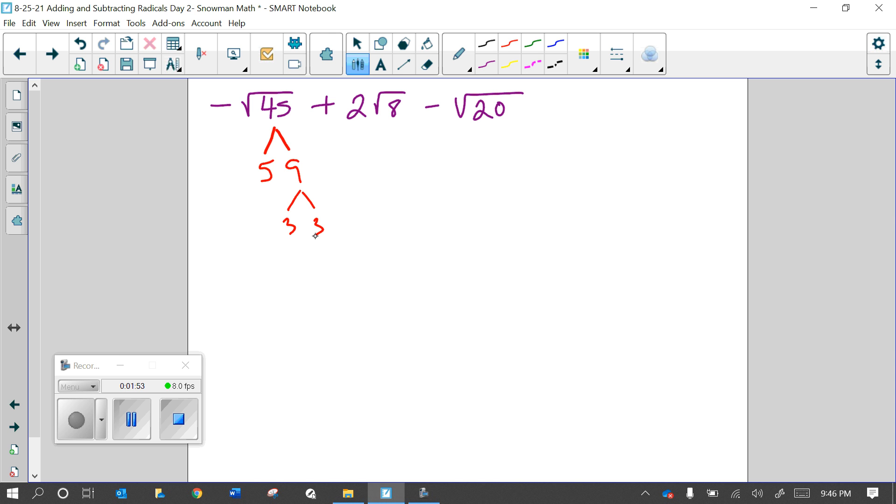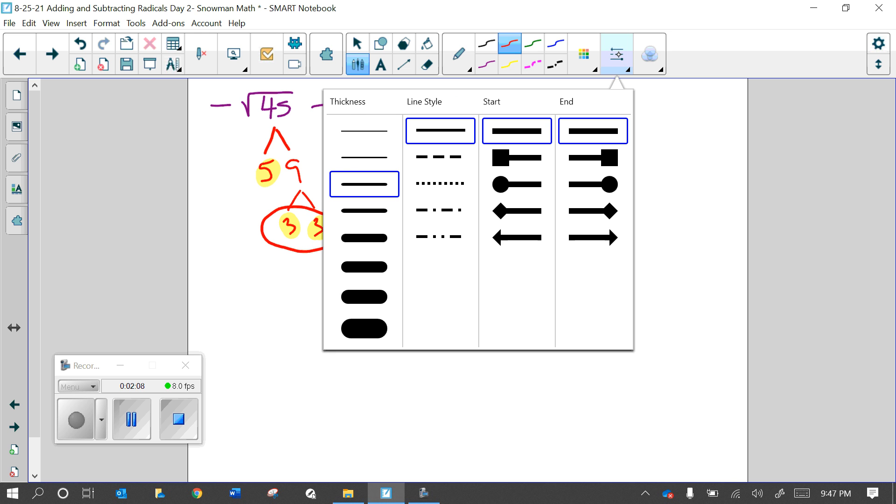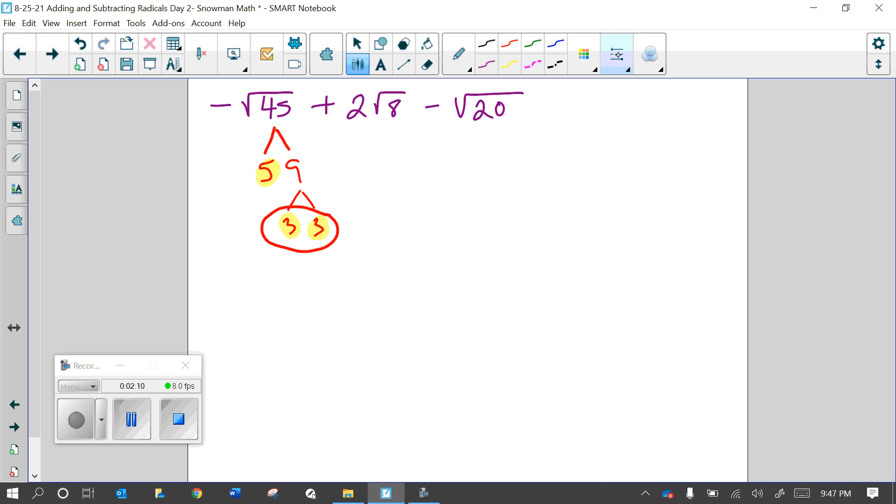And then 9 breaks down to be 3 times 3. Now we are working with those prime numbers, the 5, the 3, and the 3. So we have a pair of 3's. That means one of the 3's comes out of the radical. Whenever you have a pair, one comes out. And then underneath, we just have this single 5. He doesn't have a buddy, so he stays under the radical.